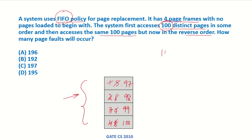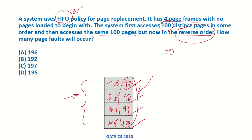So these 100 pages will cause 100 page faults in total, and in the end this is the snapshot of the memory. Now these same 100 pages are being accessed in the reverse order. First page 100 will be accessed, which will be a hit because it is already in memory, then 99, 98, 97 — all of these are already a hit. Then when page 96 comes and FIFO is followed again, since page 97 was brought in first it will be replaced by 96, then 95, then 94, then 93. So the first four pages from 100 to 97 accessed in reverse order are hits, but after that the remaining 96 pages will be a page fault again.